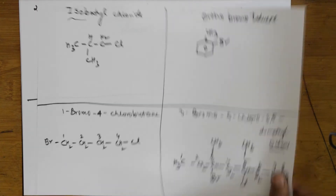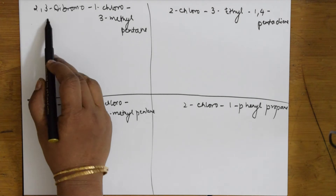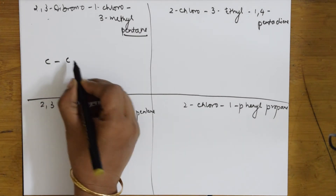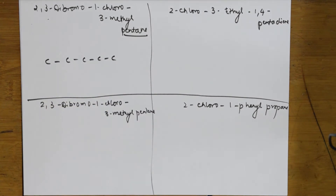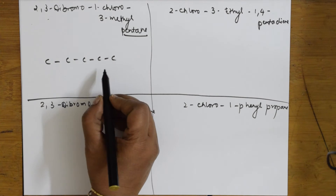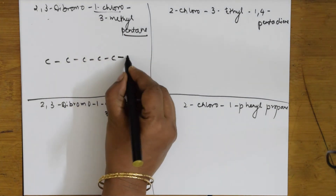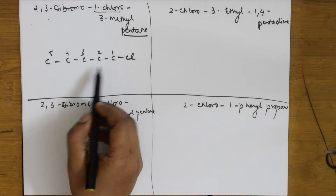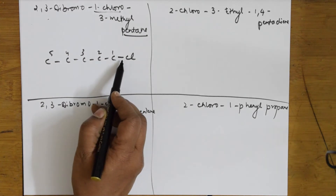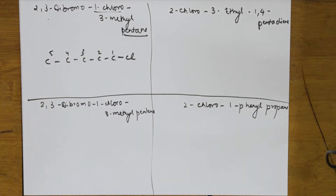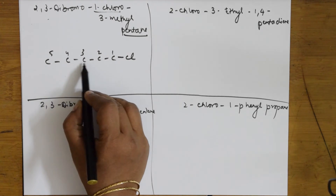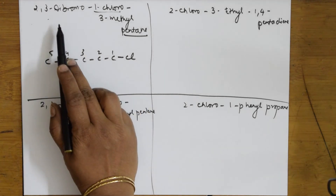Next: 1-chloro-2,3-dibromo-3-methylpentane. The parent chain is pentane: one, two, three, four, five. Why do I start numbering from this end? Because of the locant rule — substituents should get the minimum numbers. Starting from the chloro end gives lower locants overall compared to starting from the other direction.